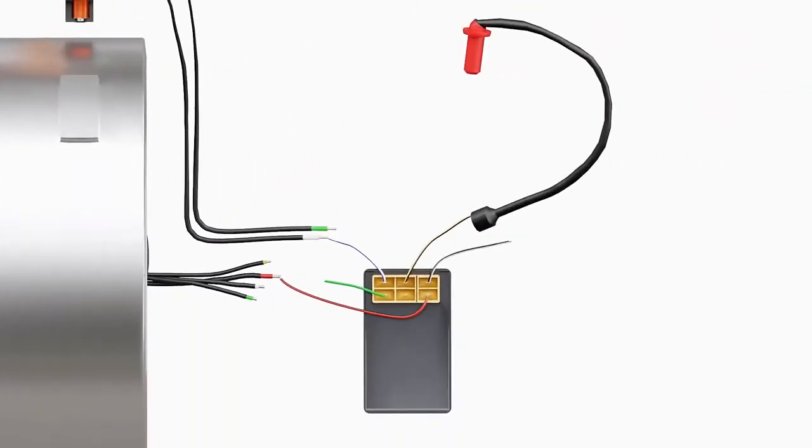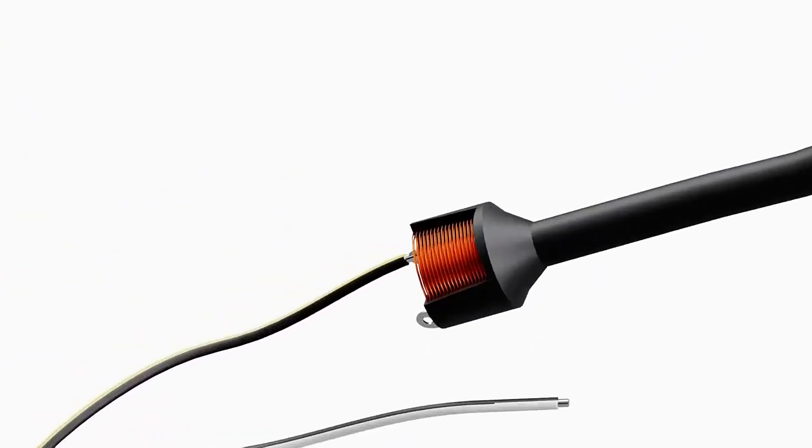To increase the voltage further, an ignition coil is used. The ignition coil is a step-up transformer, which increases voltage up to 200 times the input voltage, which is sufficient to fire the spark plug.